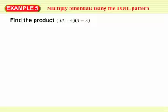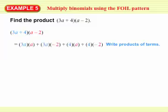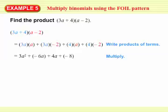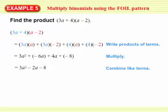Let's practice this by multiplying 3a plus 4 times a minus 2 using the FOIL pattern. The first term is 3a times a — the product of the first terms. Next is 3a times negative 2 — the product of the outer terms. Then 4 times a — the product of the inner terms. And finally 4 times negative 2 — the product of the last terms. Multiplying each: 3a times a gives 3a squared; 3a times negative 2 gives negative 6a; 4 times a gives 4a; 4 times negative 2 gives negative 8. Finally, combining the like terms — negative 6a and positive 4a — leaves negative 2a. So the final answer is 3a squared minus 2a minus 8.